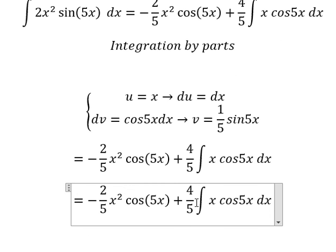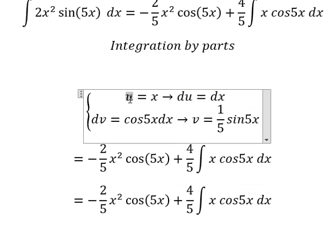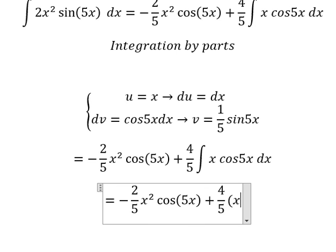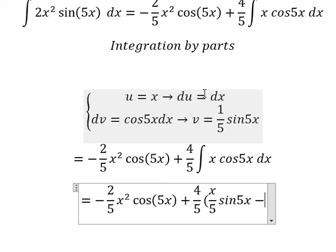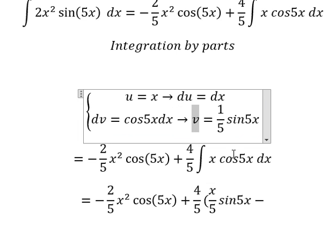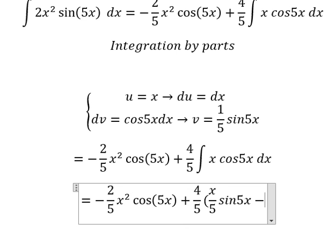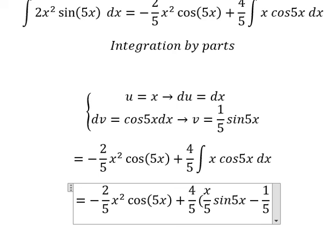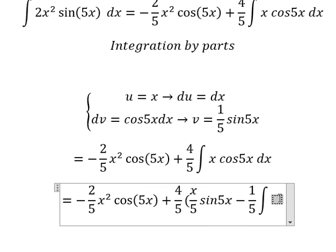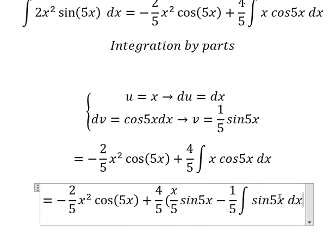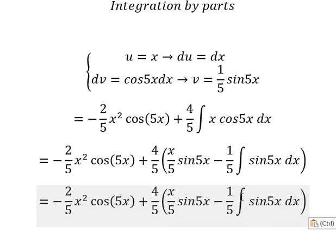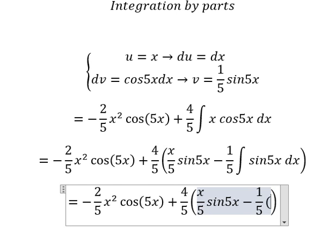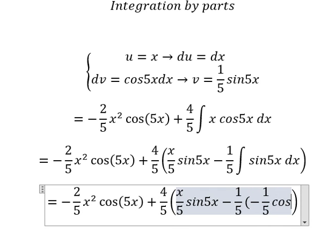So the integration of this one, we have u multiplied by v minus du multiplied by v. So we have 1 over 5, and we have the integration sine 5x. The integration of this one, we have negative 1 over 5 cosine 5x.